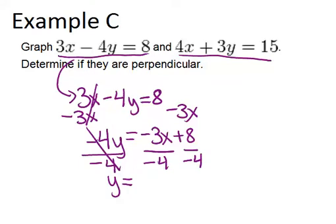Now I'm going to divide everything by negative four in order to get it in the form y equals. Negative divided by negative is positive, so this will just become three-fourths x. And then this becomes negative two because it's a positive divided by a negative. The important part, though, is that the slope of the first line is three-fourths.